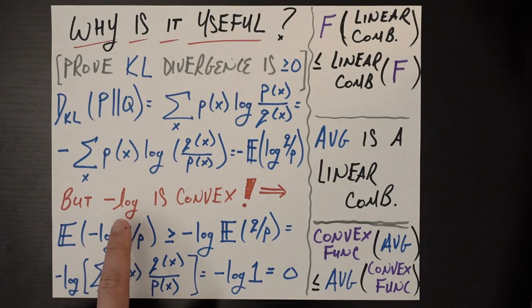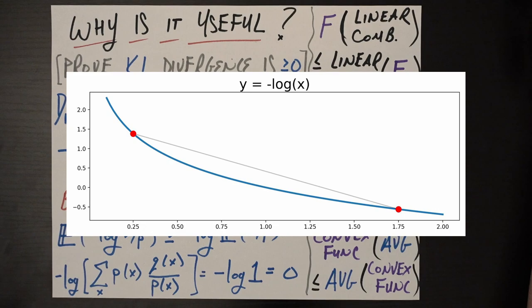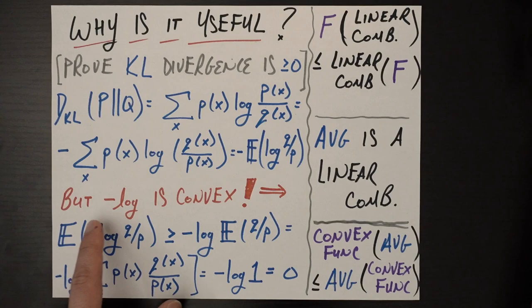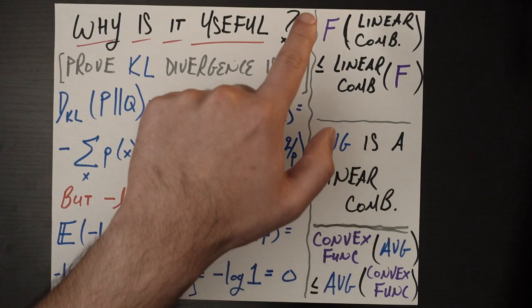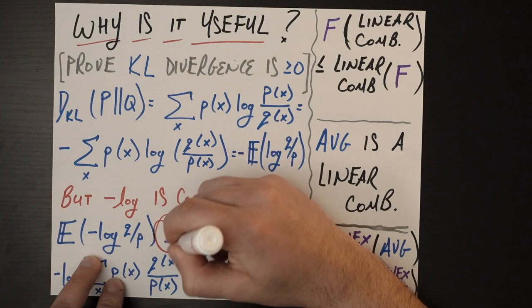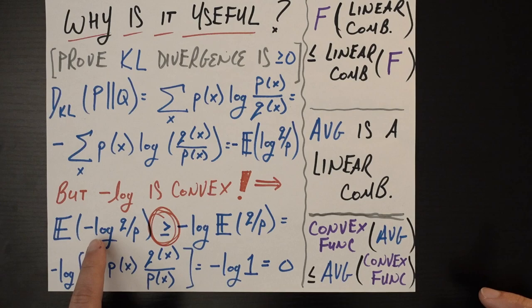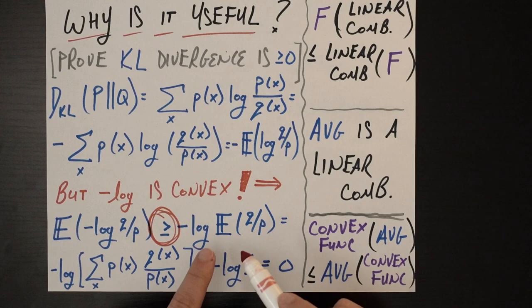Now, negative log is a convex function — you can take that for granted and just draw a picture of a negative logarithm to convince yourself, since no matter which two points you draw, the line is always above the graph. Negative log being convex means I can rewrite the expected value of negative log q over p using Jensen's inequality. Here's Jensen's inequality — let me circle it in a big red circle. The expected value of negative log q over p, which is the average of a convex function applied to inputs, is greater than or equal to the negative log of the expected value of q over p — the convex function applied to the average.